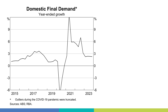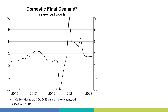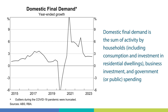Let's start with economic growth. Growth in the Australian economy has slowed considerably over 2023. The black line shows domestic final demand — a measure of spending in the economy. It's the sum of activity by households including consumption and investments in residential dwellings, business investments, and government or public spending. As you can see in the graph, year-ended growth in domestic final demand slowed in 2023 relative to the two years prior.